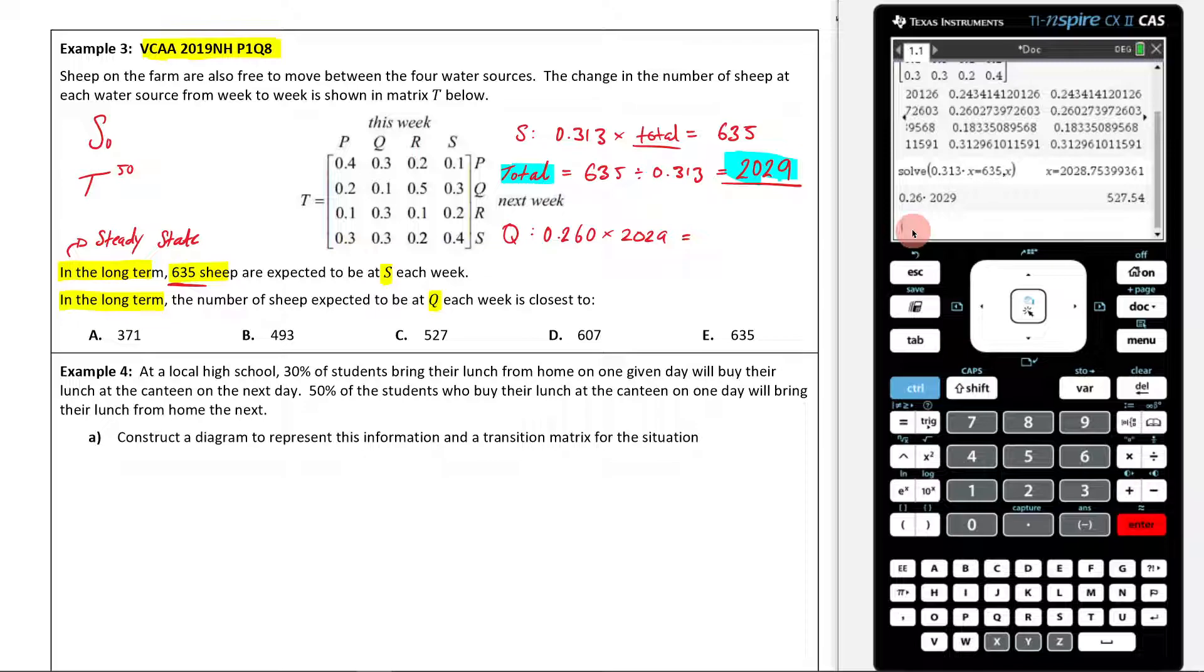What I'm going to get here is 527.54. It says closest to, so now I'm going to look at all my options: 371, 493, 527, 607, 635. It's going to be C. That's what it's closest to there. So that's how you'd answer this question.